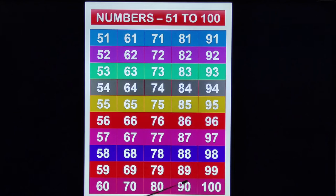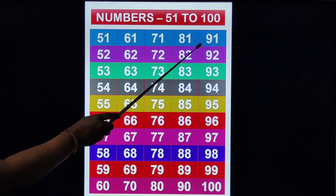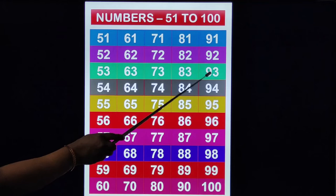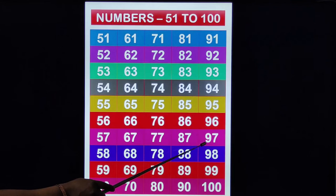After 90: 91, 91, 92, 93, 94, 95, 96, 97, 98, 99, 100. It's a 3-digit number: 1, 0, 0 — 100. After 99: 1, 0, 0 — 100.